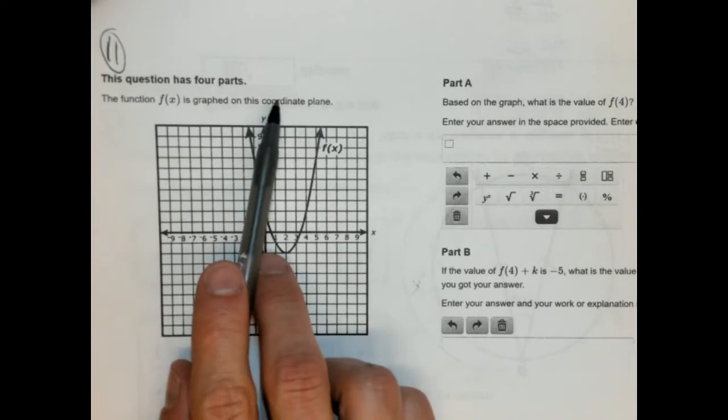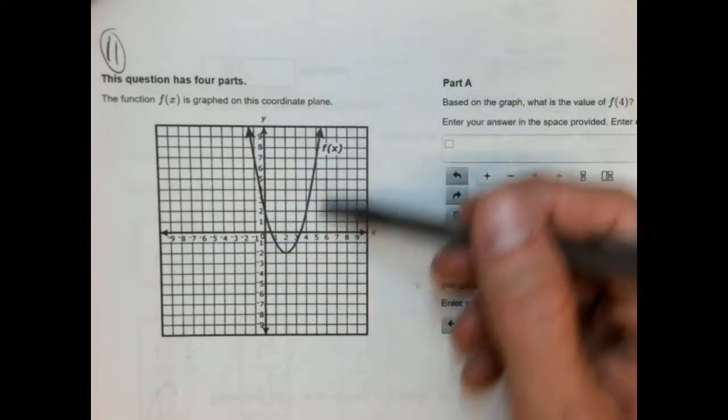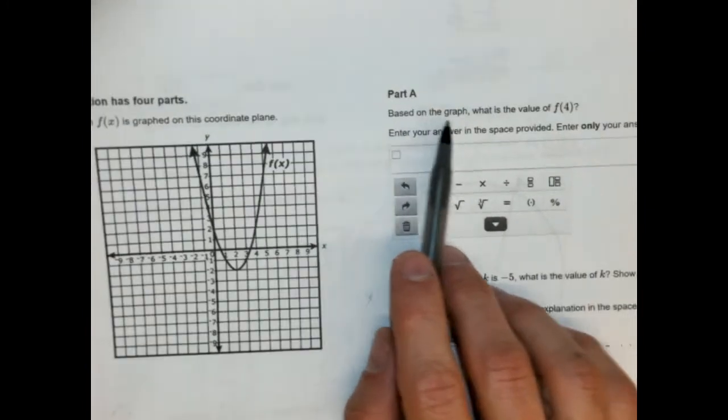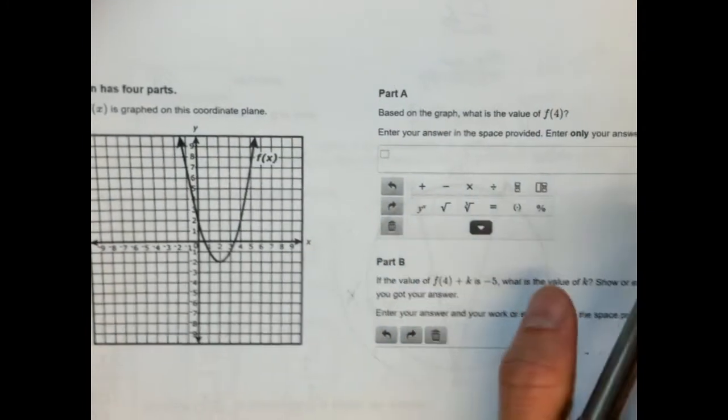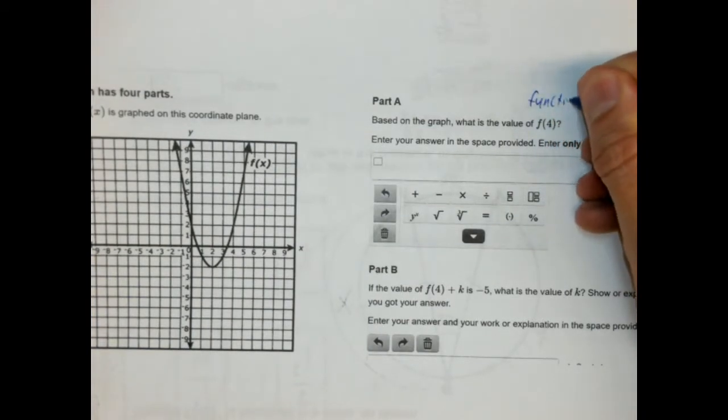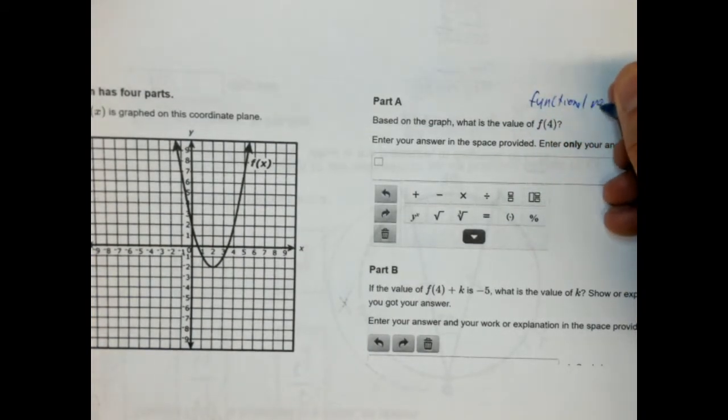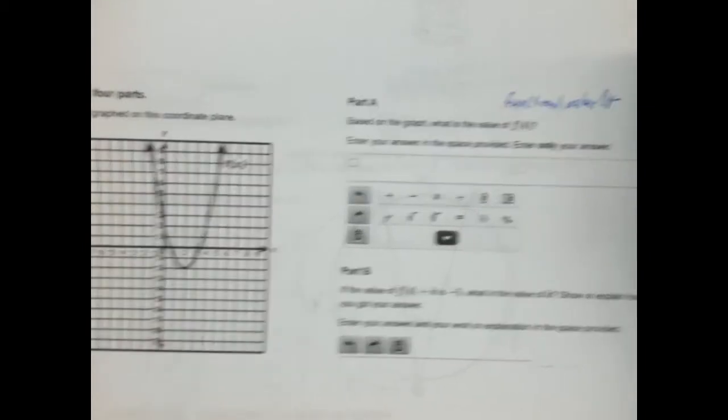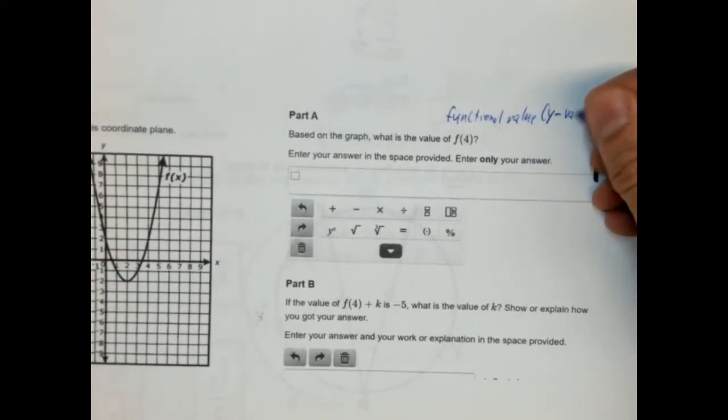The function f(x) is graphed on the coordinate plane here. This looks like a quadratic function. Part A, based on this graph, what is the value of f(4)? So f(4) is what we call a functional value. For those of you remember, functional value is really just a y value. It's a fancy way of saying that.